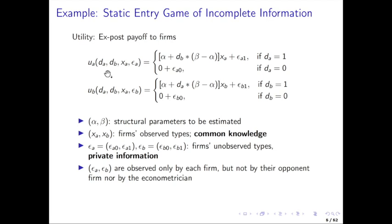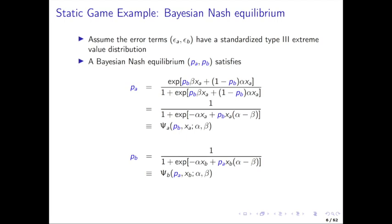Whenever making the optimal decision, firm A needs to form expectations about the probability that the other firm is there, integrating out the opponent's epsilon shock which is unobserved. This is exactly how we find the equilibrium. We work with the Bayesian Nash equilibrium where firms make rational expectations given their knowledge about the distribution of those epsilons, but without knowing the actual realizations. You can write out the Bayesian Nash equilibrium equations in logit form, because the epsilon shocks are Type I extreme value.